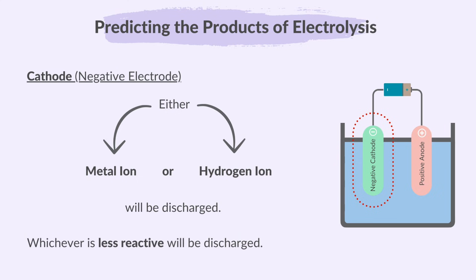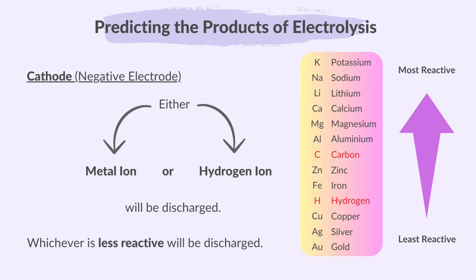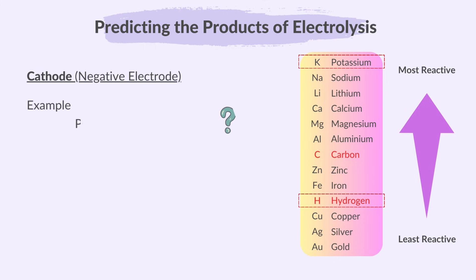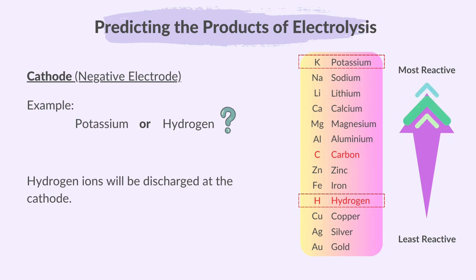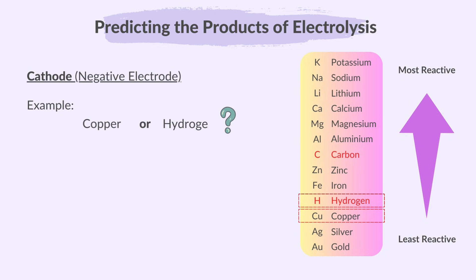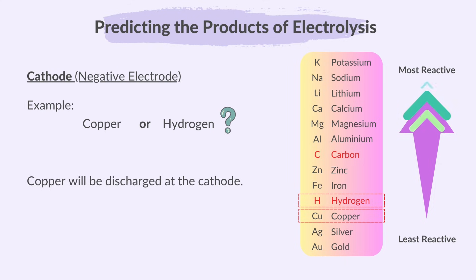Whichever is less reactive will be discharged. Let's look at the reactivity series. As you go down the series, reactivity tends to decrease; the elements at the top are more reactive. For example, if choosing between hydrogen and potassium, hydrogen is less reactive, so hydrogen ions will be discharged at the cathode and hydrogen gas will be produced. If the cations are hydrogen and copper, copper is less reactive, so copper will be discharged at the cathode. In both cases, the other ion will remain in the solution.